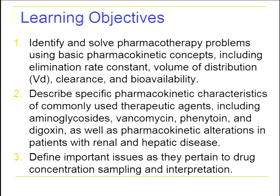We'll talk about basic concepts and do a little math at the beginning. We'll cover elimination rate constants, volume of distribution, clearance, and bioavailability. There are also some specific pharmacokinetic characteristics of commonly used therapeutic agents that we'll go over toward the end of the presentation. We'll also discuss patients with renal disease and hepatic disease, and define important issues related to drug concentration sampling and interpretation, which is very important in pharmacokinetics.